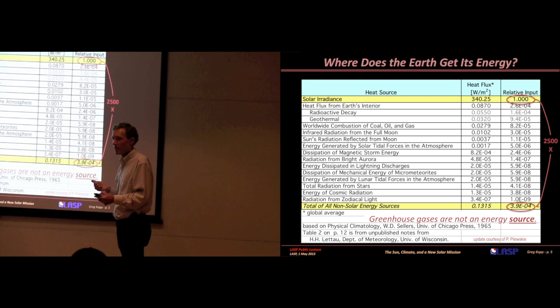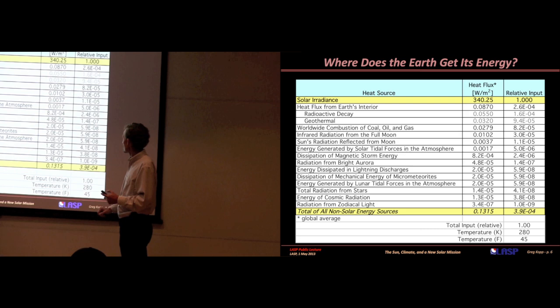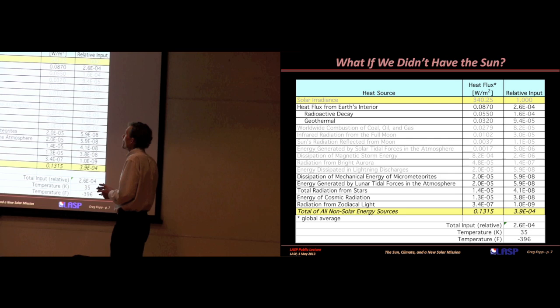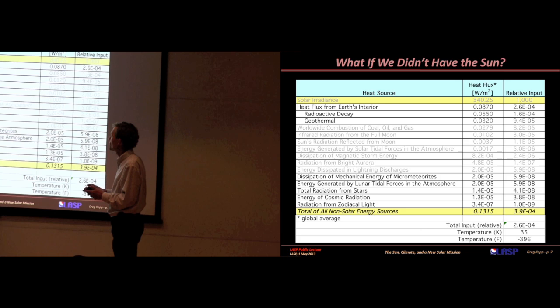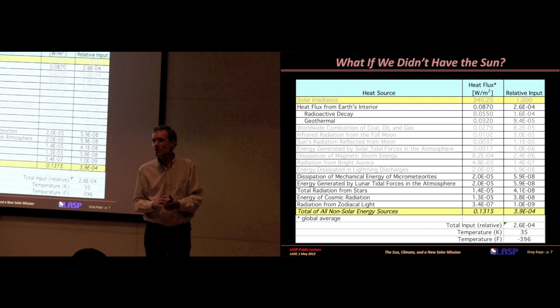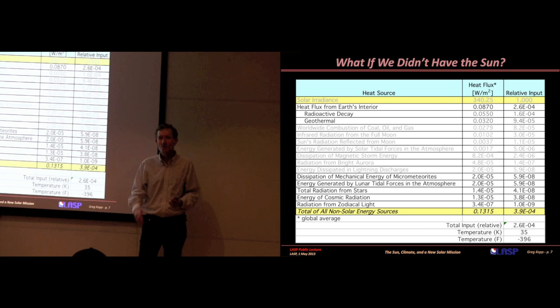Greenhouse gases aren't an energy source. They regulate what happens to the outgoing energy and keep it trapped on earth a little bit. We can change those greenhouse gases, and we are a little bit, but they're not purely human-induced. What if we didn't have the sun? We'd still have heat flux from the earth's interior, radioactive decay, geothermal. We would have a temperature of about minus 400 degrees Fahrenheit. Not quite what we'd want to call a climate. That's how big of an input sun is for us. It really is what's driving our climate system.